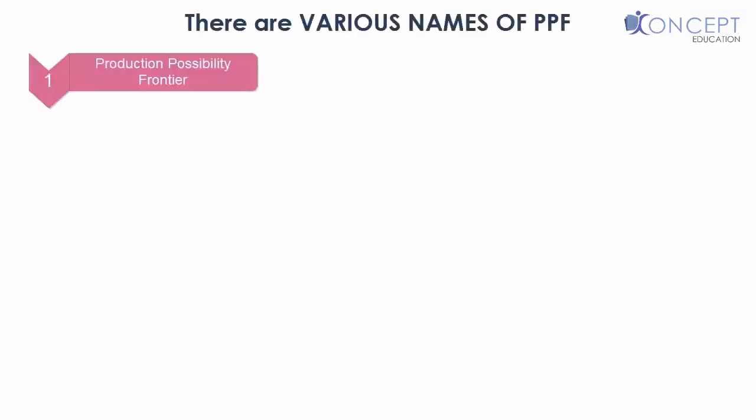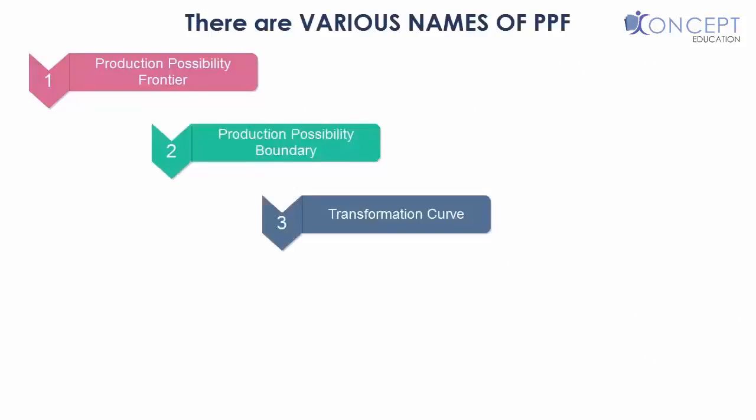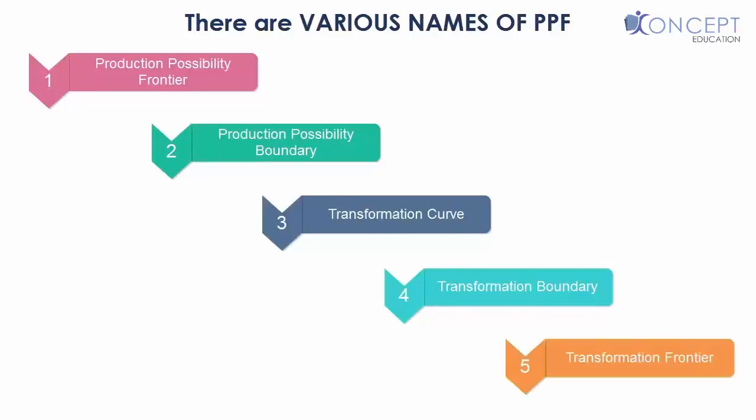Now PPC has many names and the names are Production Possibility Frontier, Production Possibility Boundary, Transformation Curve, Transformation Boundary and Transformation Frontier. Please memorize all these names as it is very important and they ask them a lot in MCQ.